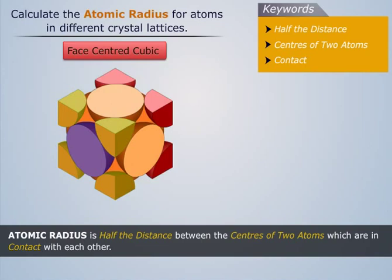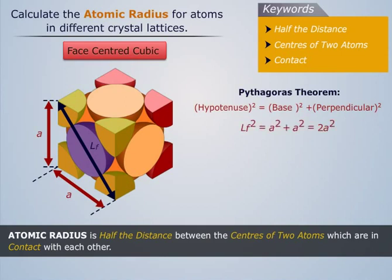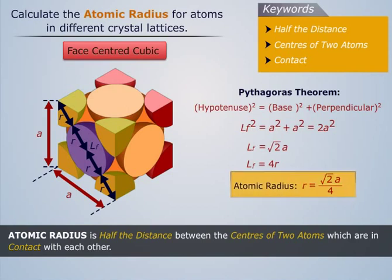Let us denote the diagonal of the face by LF. It is the hypotenuse to the two edges of the cube on the same face. Applying Pythagoras theorem and solving for LF, since the face diagonal LF is equal to 4 atomic radii, the atomic radius for a face centered cubic lattice is √2A/4.